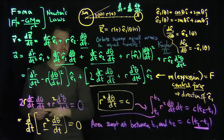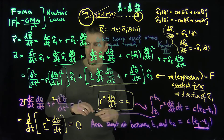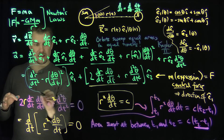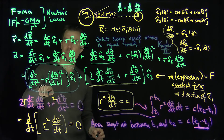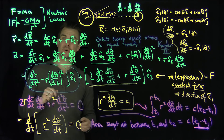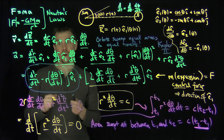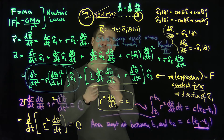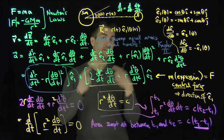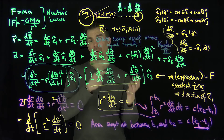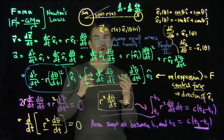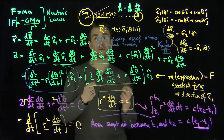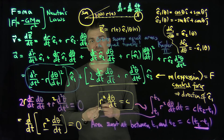To prove Kepler's first law — that the orbit is an ellipse — we'll return to the e1-hat equation in the next video, equating it with Newton's law of gravitation and solving a differential equation in polar coordinates. After that, we'll prove Kepler's third law, which relates the length of the major axis to the period via a proportionality. Thank you very much.